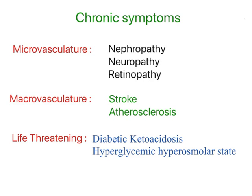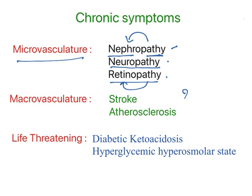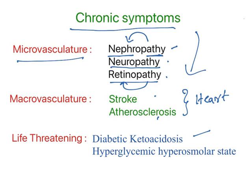Next, the chronic symptoms are nephropathy, neuropathy, and retinopathy. Nephro means kidney — the functional unit of kidney is nephron — pathy means pathology, so this means the kidney got damaged. Neuropathy means neurons got damaged. Retinopathy — retina means eye — the eye got damaged. These are microvascular symptoms. It also affects heart functioning which may result in stroke and atherosclerosis. Long-term diabetes will cause all these things. The more problematic ones are diabetic ketoacidosis and hyperosmolar hyperglycemic state — these two are dangerous, which may lead to coma and need immediate hospitalization.